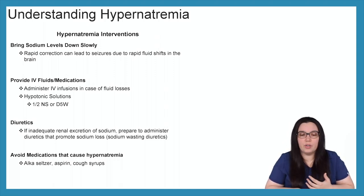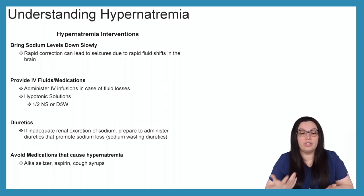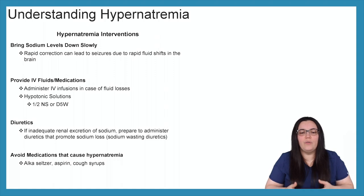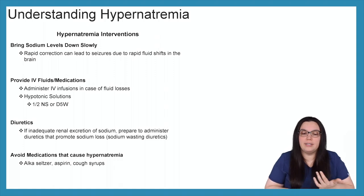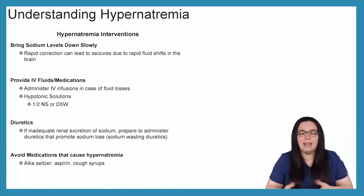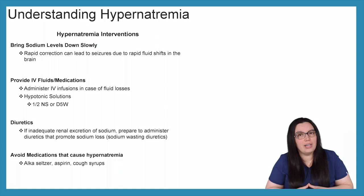Diuretics are a huge intervention. If we have adequate renal excretion of sodium, we need to administer diuretics because they help promote sodium loss — specifically sodium-wasting diuretics such as thiazides and loop diuretics. Lastly, we want to avoid medications that can cause hypernatremia. Alka-Seltzer, aspirin, and cough syrups all contain sodium in their formulations. If patients are already hypernatremic and taking these, it's only going to make it worse, so we should educate them to stay away from those medications if at all possible.